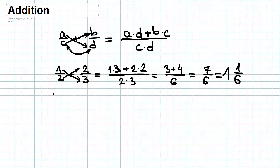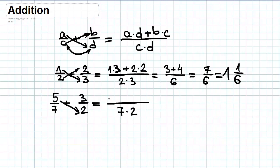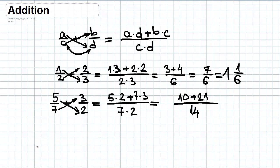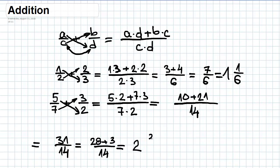Let's try another example: five-sevenths plus three-halves. We multiply seven and two for the denominator, then five times two plus seven times three in the numerator. The denominator is fourteen, and the numerator is ten plus twenty-one, which gives thirty-one over fourteen. We transform this improper fraction into a mixed number: thirty-one equals twenty-eight plus three over fourteen, which gives us two and three over fourteen.